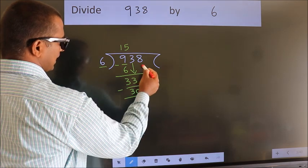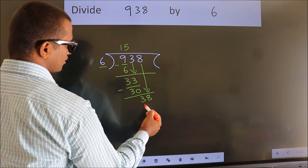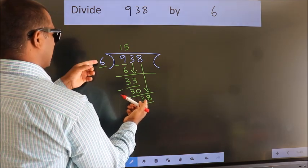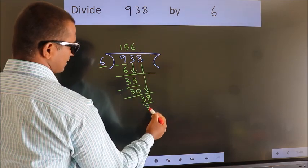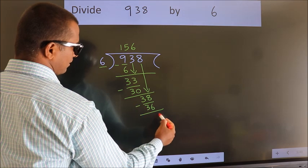After this, bring down the beside number. 8 down, so 38. A number close to 38 in the 6 table is 6×6=36. We subtract. We get 2.